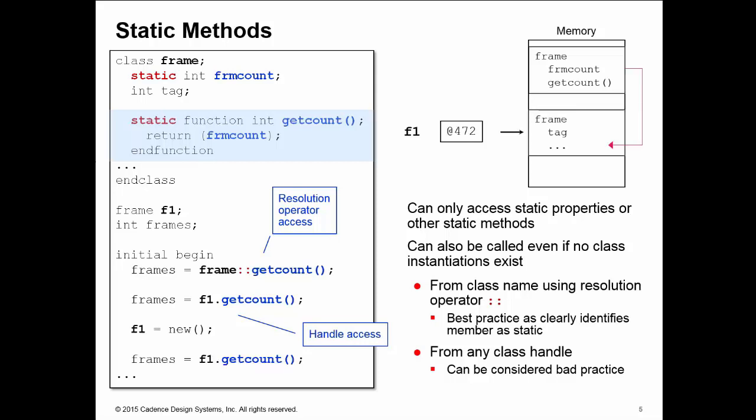When you create the instance of the frame inside of f1 then now you can call getCount as a normal method off the handle. But again it may be considered better practice to always use the resolution operator to access the static method. Because then that clearly identifies the method as being static.